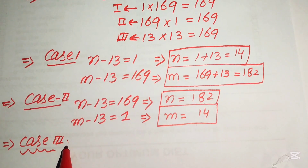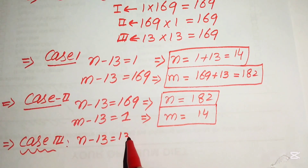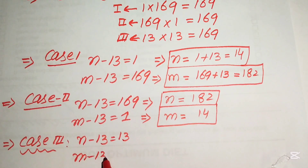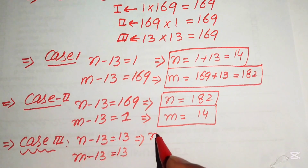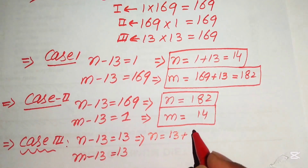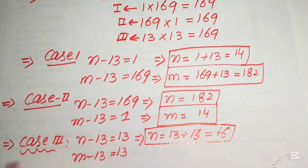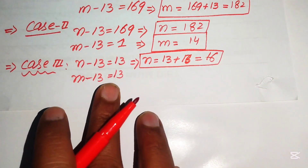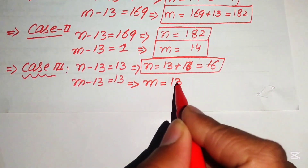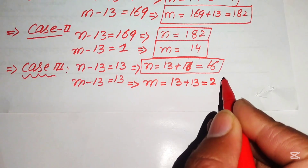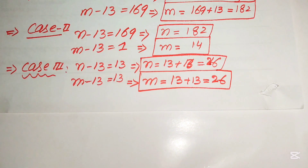Case 3: n minus 13 equals 13 and m minus 13 equals 13. So n equals 13 plus 13 equals 26, and m equals 13 plus 13 equals 26.